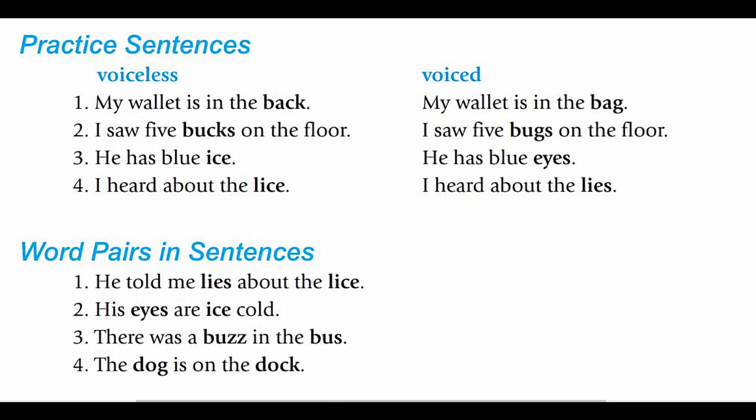Sentence pairs for practice for voiceless and voiced consonants. You will hear two sentences. The first sentence has a word with the voiceless consonant and the second has a word with the voiced consonant. My wallet is in the back. My wallet is in the bag. I saw five bucks on the floor. I saw five bugs on the floor. He has blue ice. He has blue eyes. I heard about the lice. I heard about the lies. He told me lies about the lice. His eyes are ice cold. There was a buzz on the bus.